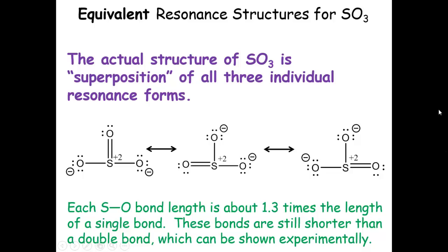The actual structure of sulfur trioxide is a superposition of all three individual resonance forms. If we average them all out, we get one composite structure with a bond length about 1.3 times the length of a single bond. All sulfur-oxygen bonds are the same length, shorter than a double bond. This can be shown experimentally, demonstrating that bond order is about 1.3, as opposed to two oxygens having bond order one and one oxygen having bond order two. All three resonance forms are equivalent and required to describe the bonding in SO₃.